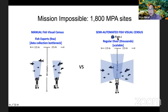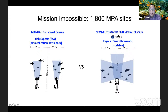What we are proposing is a semi-automated fish visual census called FishEye. For this semi-automated system, you don't need a high level of expertise. Any regular licensed open water diver — and there are thousands of them in the country — can conduct a FishEye semi-automated fish visual census. Anyone, even without any knowledge of fish, as long as the diver can follow instructions, the census can be done. This is something that's very scalable — you don't need to depend on experts to collect the data.